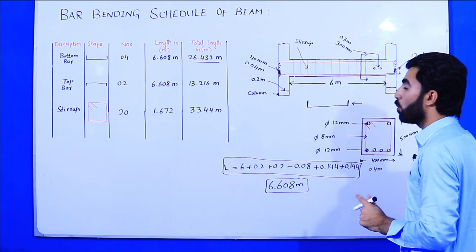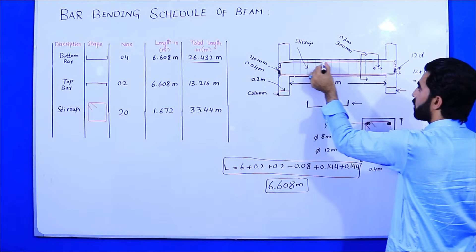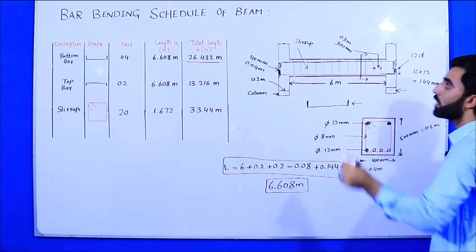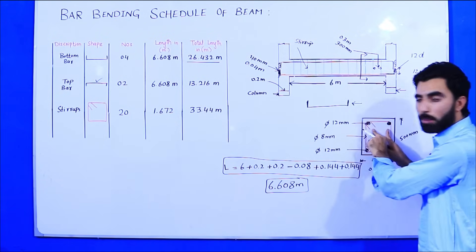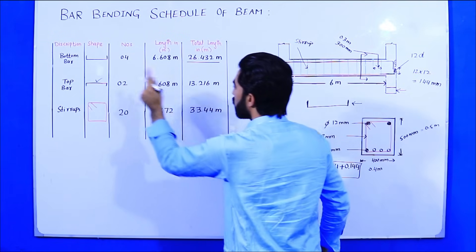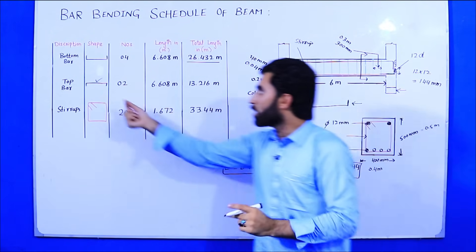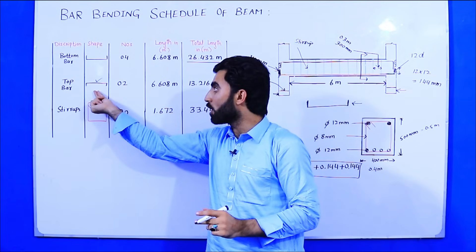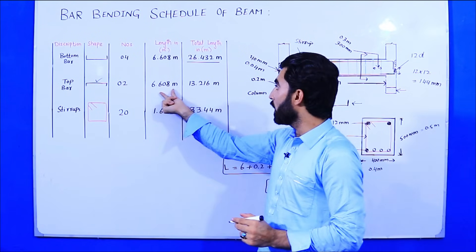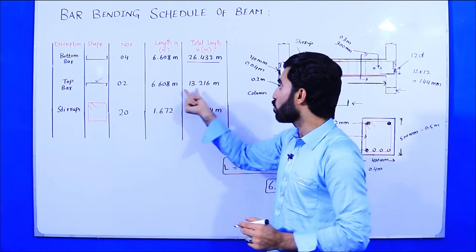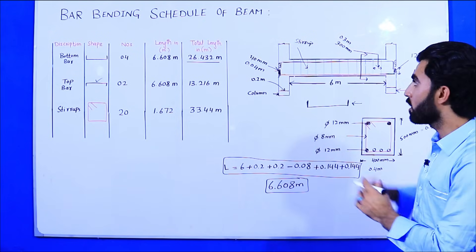Now we calculate the length of the top bars. The shape of the top bar is the mirror opposite of the bottom bar, and we have two numbers at the top. Since the shape and dimensions are the same, the length is also 6.608 meters. So total length = 2 × 6.608 = 13.216 meters. This is the total length of top bars in this simply supported beam.